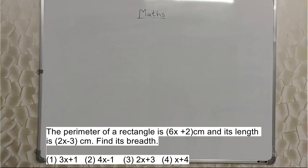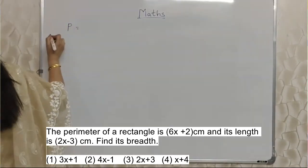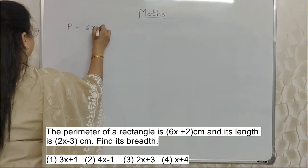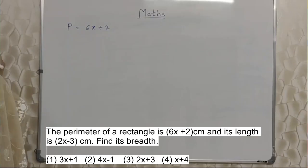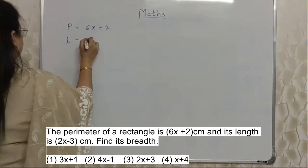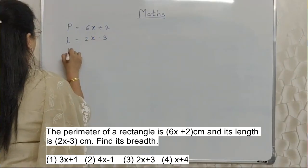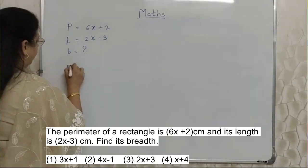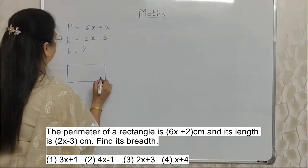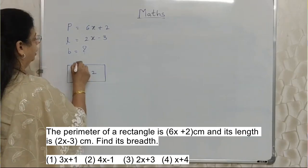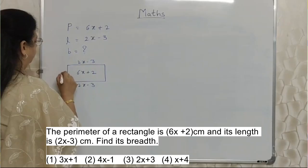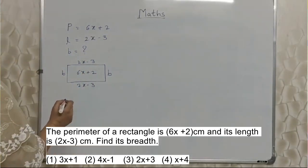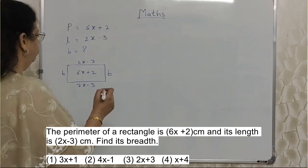Read the next sum properly. The perimeter of a rectangle is 6X plus 2 cm, and its length is 2X minus 3 cm. Find its breadth. Perimeter they have given as 6X plus 2 cm, and length is 2X minus 3. Breadth we need to find out. Now this is the mathematical information — we will solve with the help of this.